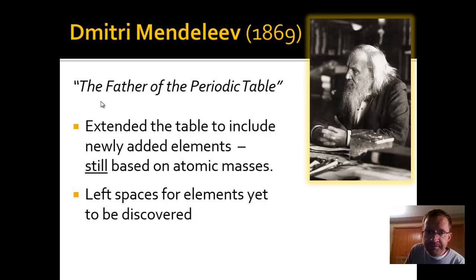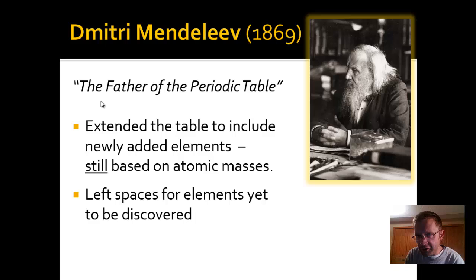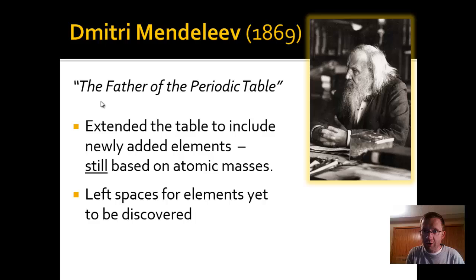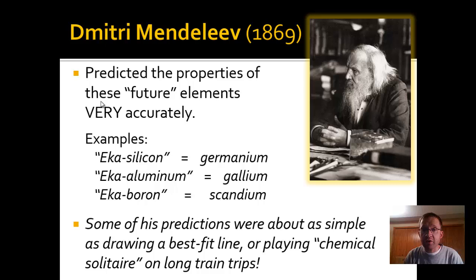The third person is probably the key character: Dmitri Mendeleev. He took Newlands' table and made it wider — nearly as wide as today's periodic table — and added more elements to fill in those spaces, still based on atomic mass. Importantly, he left spaces for elements he believed would be discovered later, and he predicted the properties of those future elements with remarkable accuracy.